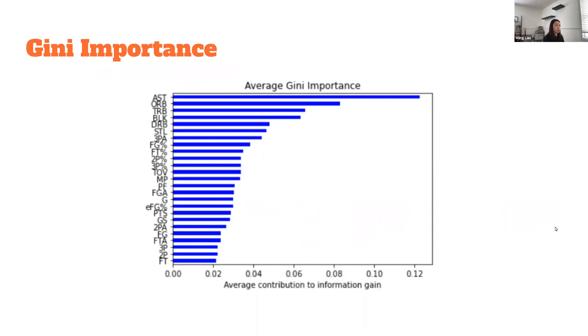Looking at the Gini importance, it's no surprise that some of the top features are some variation of the five main stats. You do see that points are lower on the chart, with three-point attempts being higher.